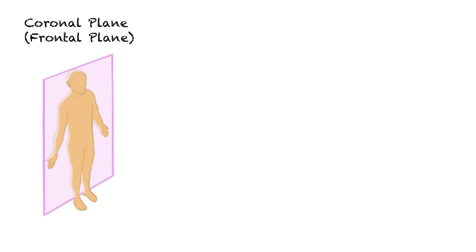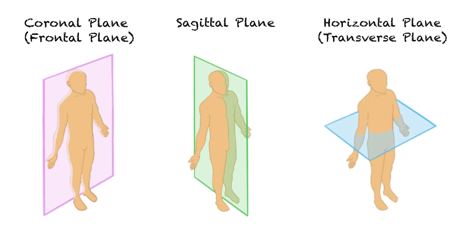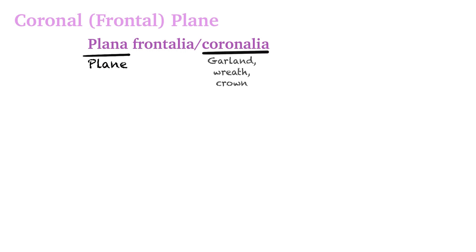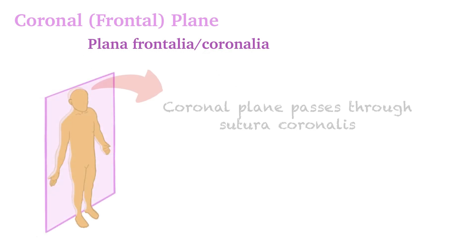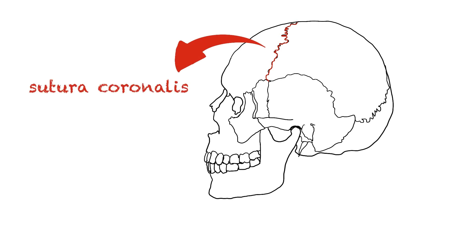All anatomical descriptions are based on three main imaginary planes: the coronal plane (in other words, frontal plane), the sagittal plane, and the horizontal or transverse plane. The coronal or frontal plane is also known in Latin as plana frontalia or plana coronalia. Plana means plane in Latin. The coronal term is derived from Latin and means gallant, red, or crown. The coronal plane is called coronal because it passes through the sutura coronalis, which is a crown-shaped structure that extends above the skull.